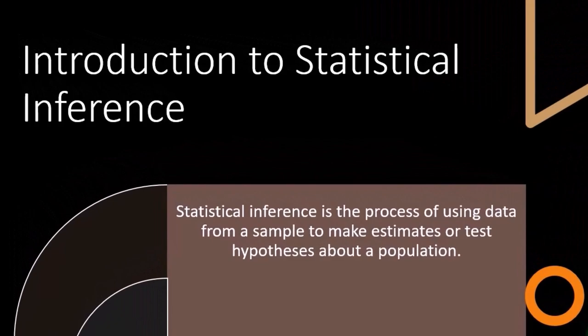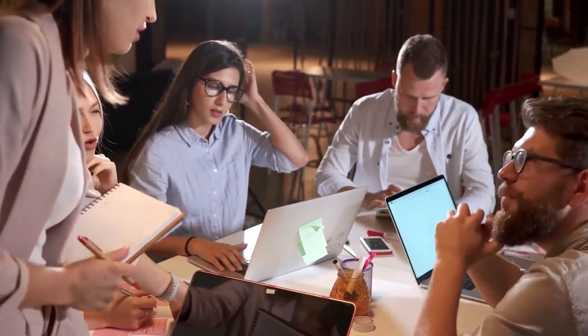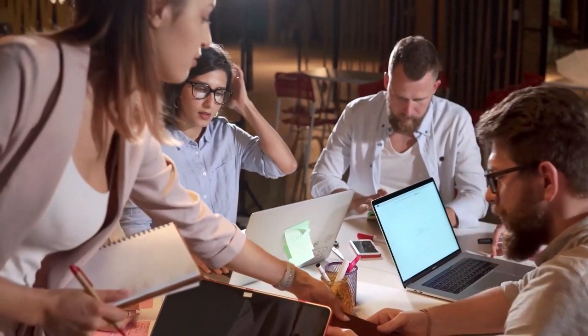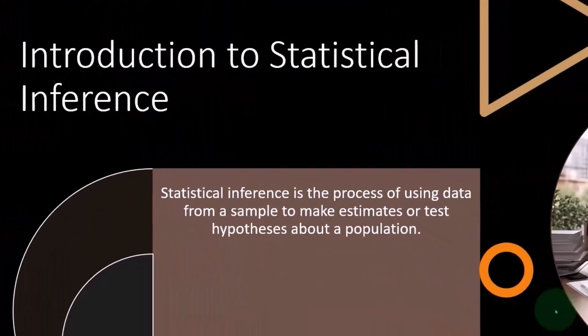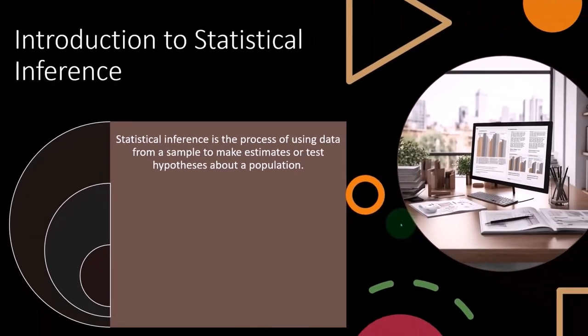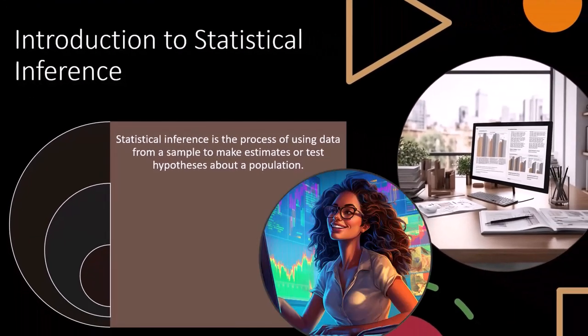The second major bucket of statistics, what we're focused on now, is where we don't know all of the data for the entire population. However, we might be able to get a sample of the population. What we want to do is extract meaning from the sample data we have, and then infer some of that meaning onto the entire population.